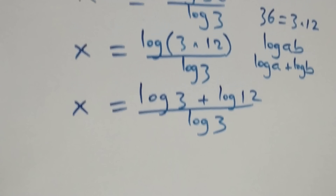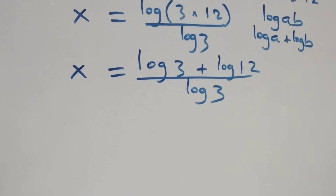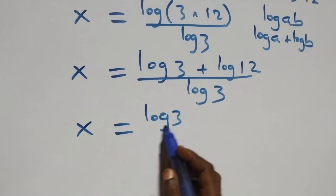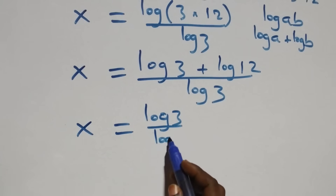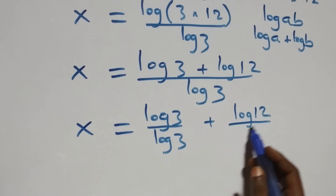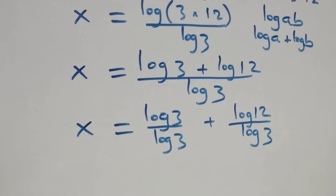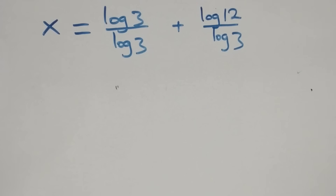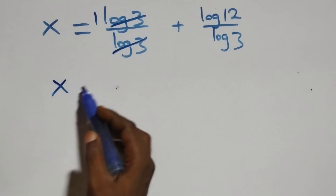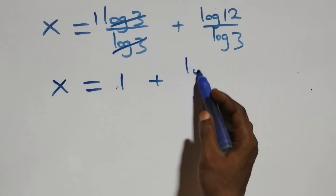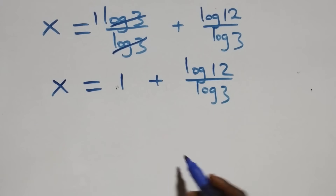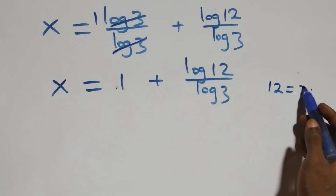We separate this into two fractions. The log 3 in the numerator and denominator cancel each other, so we have one left, giving us x equals to 1 plus log 12 over log 3.